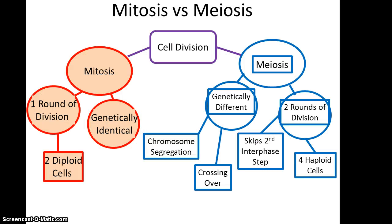To show the differences and similarities: mitosis and meiosis are both kinds of cell division. However, in mitosis you have only one round of division leading to two diploid cells that are genetically identical to each other and to their parent cell. In meiosis, you have two rounds of cell division, it skips the second interphase, and you end up with four haploid cells that are all genetically different from each other and from their parent cell. These genetic differences are caused by crossing over when tetrads are formed and by chromosome segregation during anaphase 1.